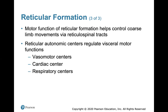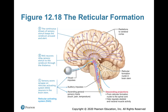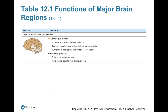Motor functions of the reticular formation help to control coarse limb movements via reticulospinal tracts, and there are different motor functions in different centers within that reticular system. Here's the reticular formation and how it radiates through different areas of the brain. You don't need to know all the specifics of the reticular and limbic system. These next four slides are important for giving you a brief summary of the functions of the major brain regions.